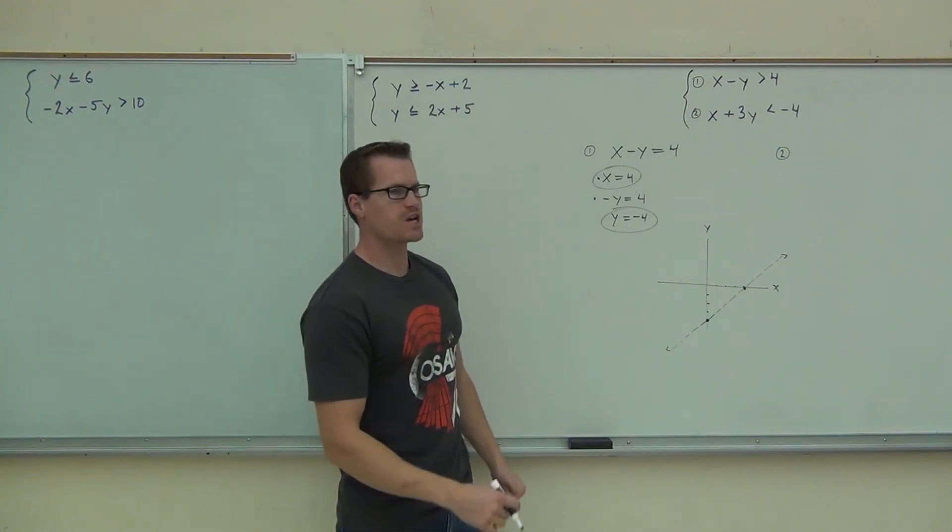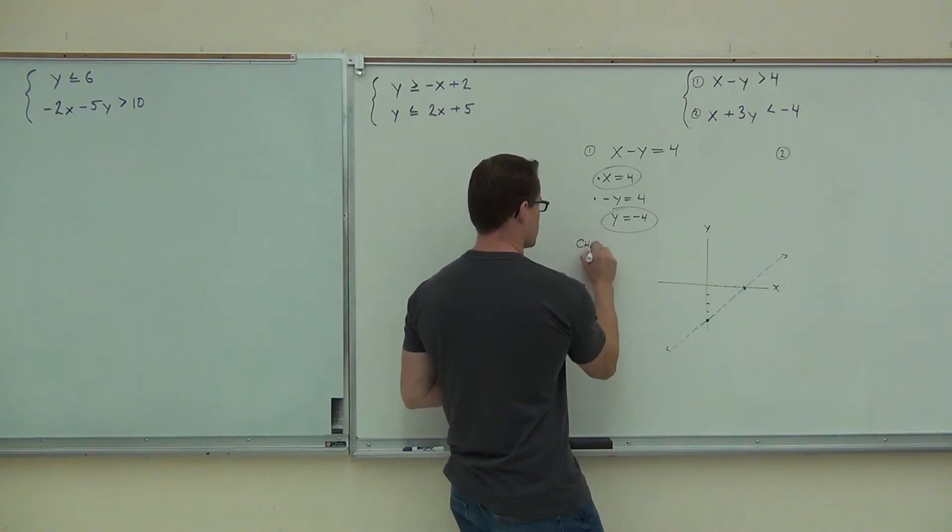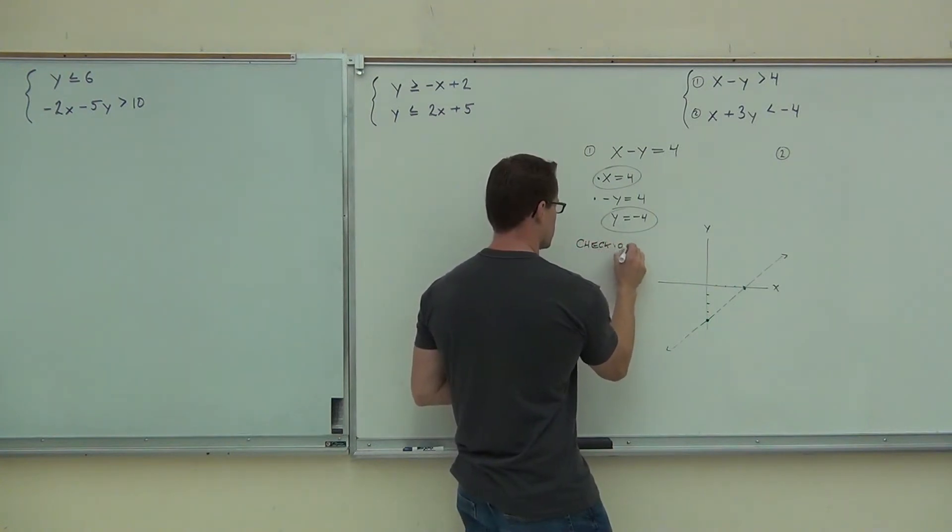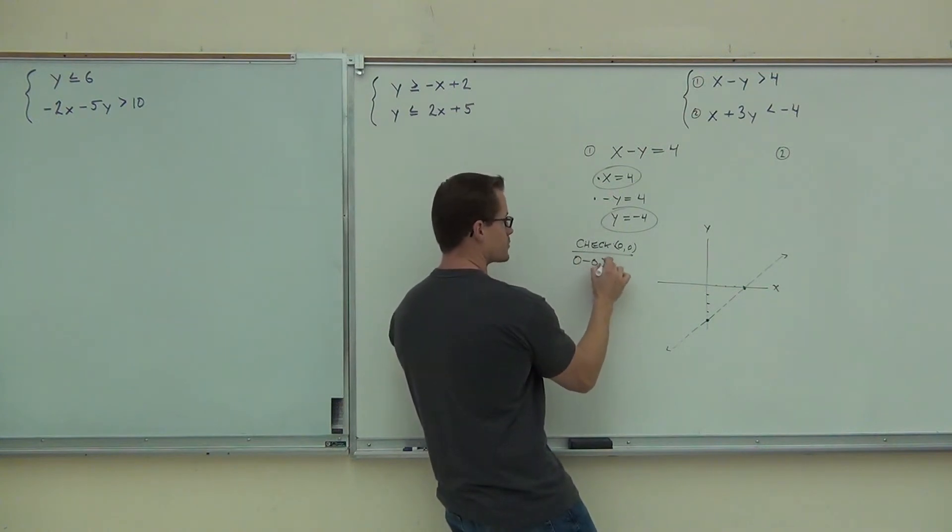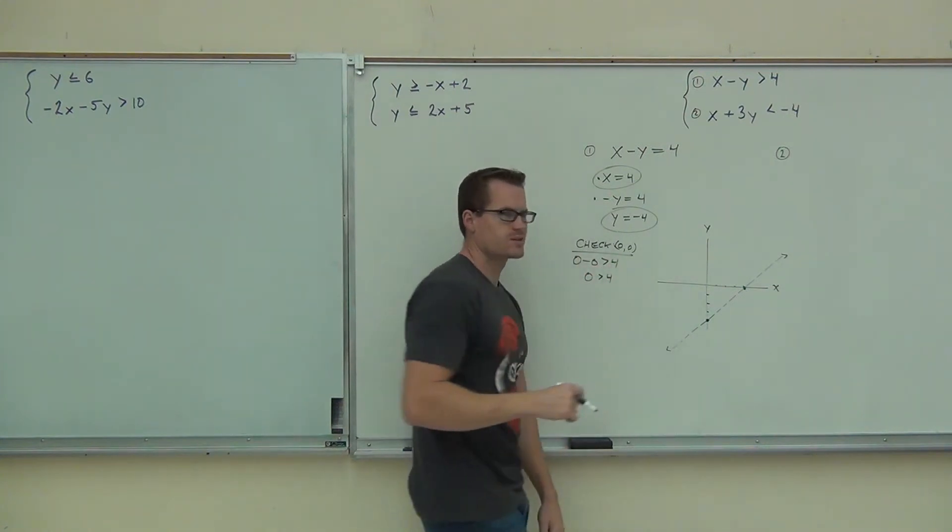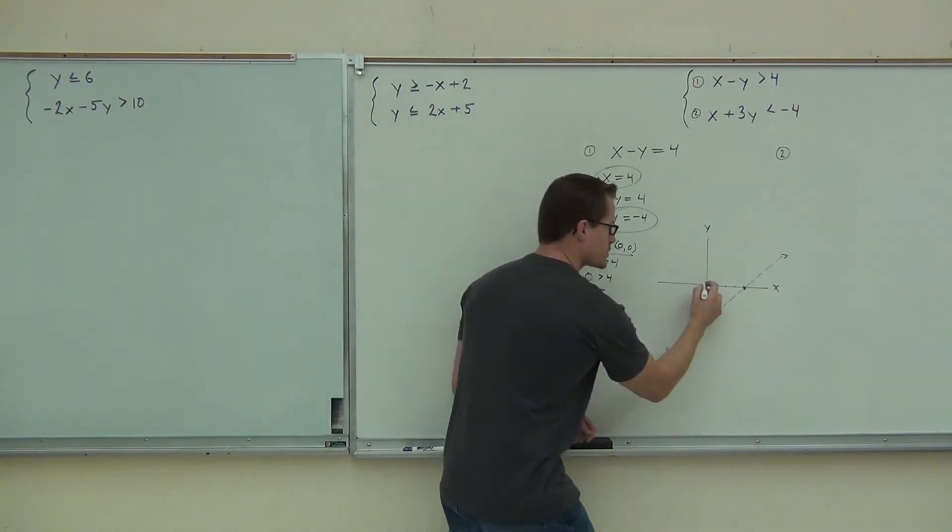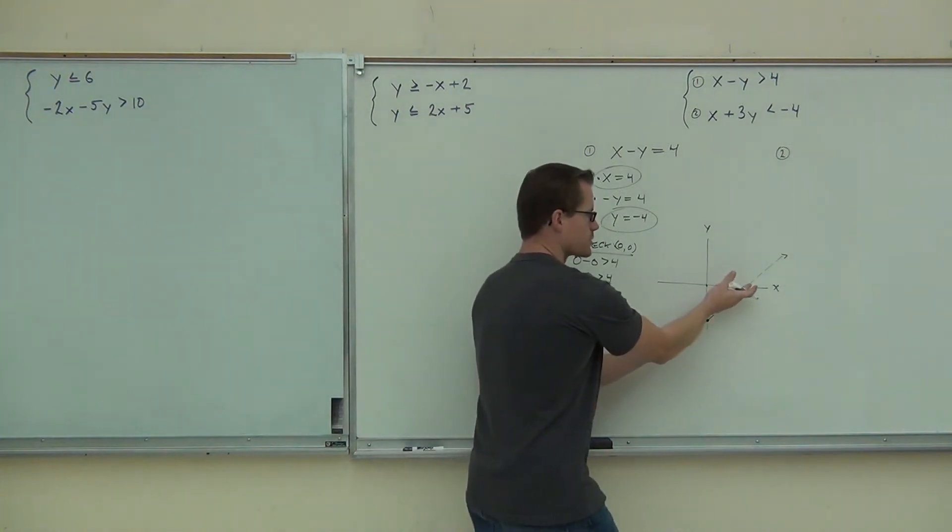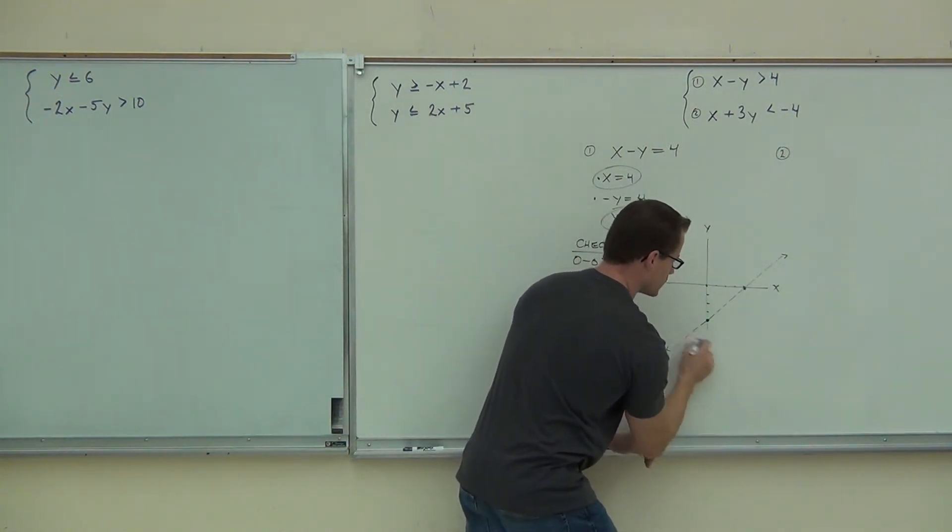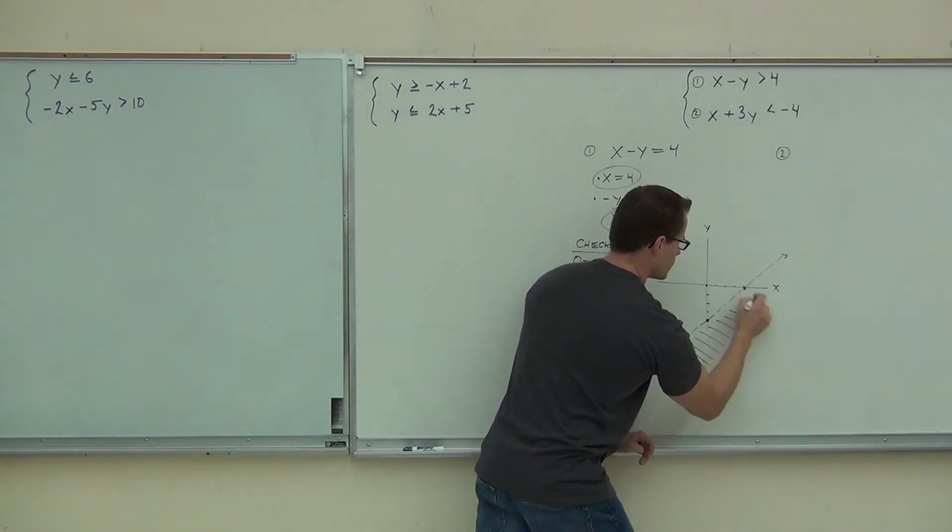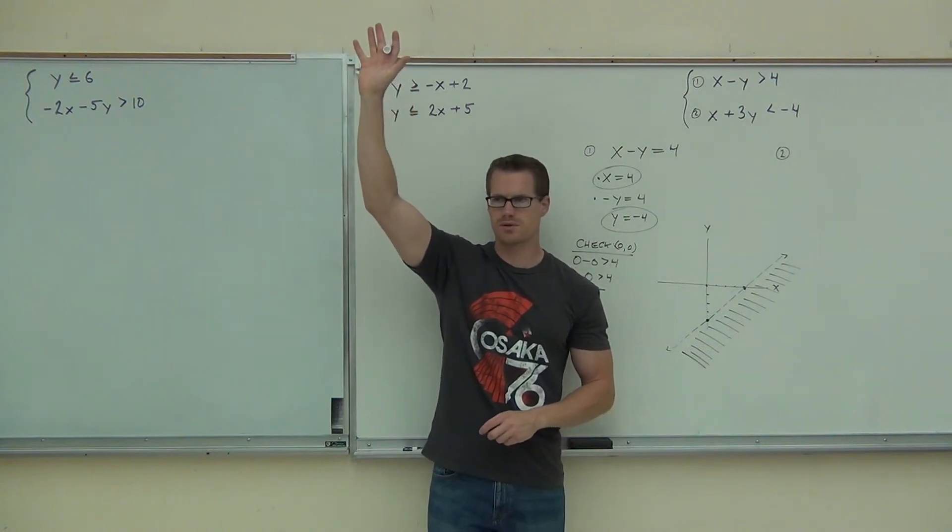Of course, we're going to make it dotted because there's not an equals part up here. So we've got our dashed line. We're good to go. And we're going to shade this. In this case, we can check the point zero, zero. That's great. Zero, zero says we're going to have zero minus zero is greater than four. That's zero is greater than four. Clearly, zero is not bigger than four. So we're going to put a false. We checked zero, zero. It was not true. It was false. So this half plane is not acceptable. The bottom half plane, that's what we're going to be shading. And you know how many people made it at least that far? Good for you. That's fantastic.